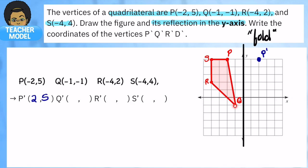Let's look at point Q, which is at negative 1, negative 1. And now again, it is 1 away from my line. So it is also going to be 1 away on the opposite side. So here is Q' and now that is 1, negative 1.